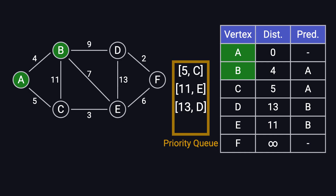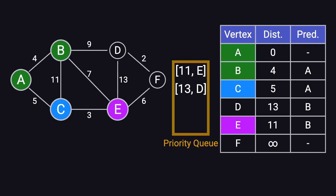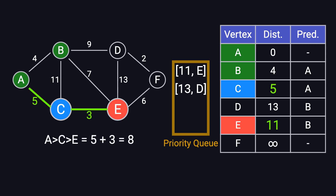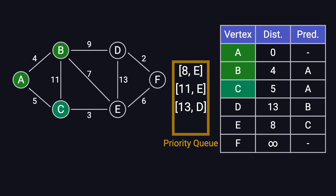Now, the priority queue contains 5C, 11E, and 13D. The next shortest node is C, so we process it next. C is connected to A, B, and E. Since A and B have already been processed, we skip them. For E, going through C costs 5 plus 3 equals 8, which is better than the current shortest distance of 11. So, we update E's distance to 8, set C as its predecessor, and push 8E into the queue. Finally, we mark C as processed.